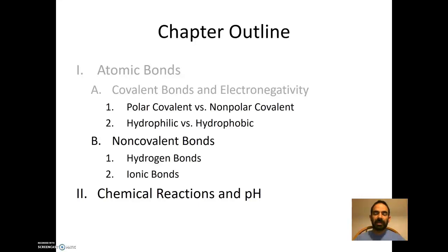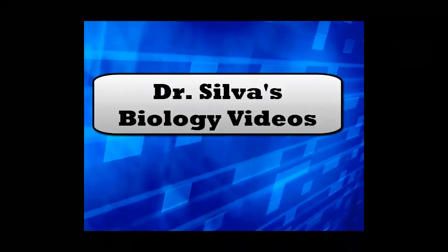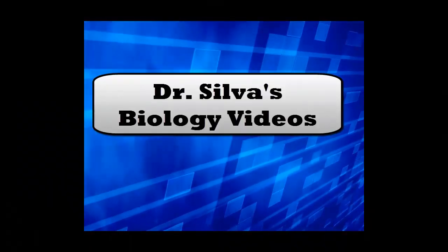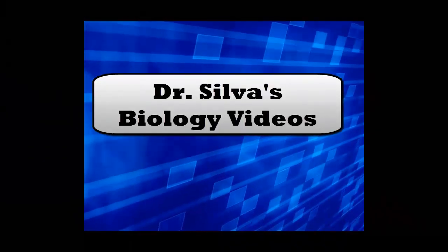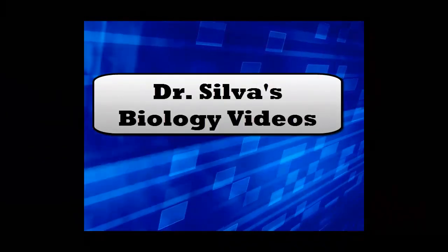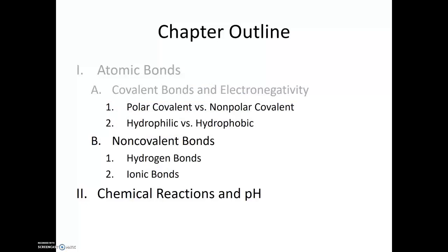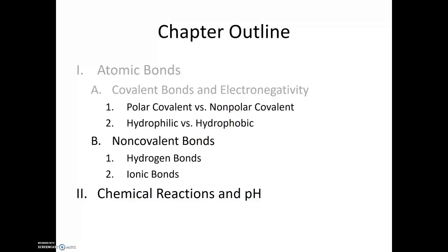In this video, we're going to talk about electronegativity and the different types of covalent bonds. We learned that atoms will form covalent bonds in order to become more stable, and they do this by sharing a pair of electrons.